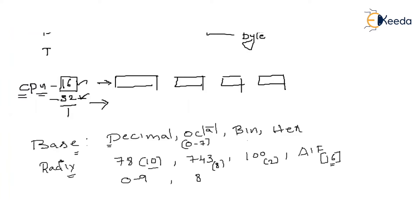The total number of symbols in binary is just 2: 0 and 1. For hexadecimal, the total number of symbols equals 16, from 0 to F. The total number of symbols supported by any radix number system equals the value of the radix.